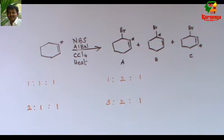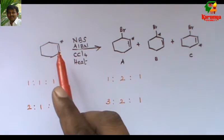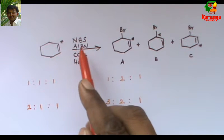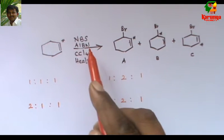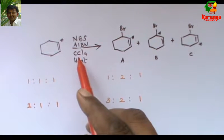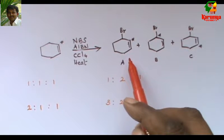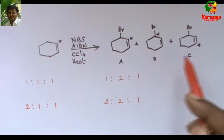Today I am going to solve a problem on radical bromination. Here is the problem. When this labeled cyclohexene is treated with N-bromosuccinimide, azoisobutyronitrile in CCl4 as solvent, it gives three products A, B and C.